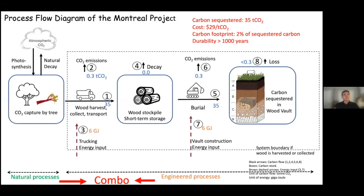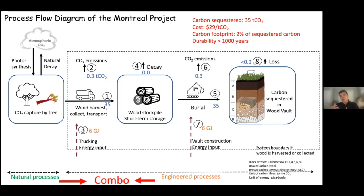To summarize the Montreal project results: 35 tons of CO2 was sequestered at $20 per ton of CO2. The carbon footprint — or efficiency — was 2% of sequestered carbon. Durability is estimated at 100 to 1,000 years based on the data analyzed so far. A flow diagram shows the whole process, with the numbers for this specific project. The key is that the natural process is outside the engineering boundary — that's the part we basically get for free. It's this combination of nature and engineered methods that really makes this approach work.